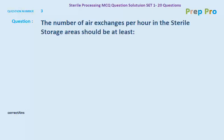Question number three: the number of air exchanges per hour in an industrial storage area should be at least how many? The options are five, four, eight to ten, and one. The correct answer is four. The number of air exchanges per hour in an industrial storage area should be at least four.